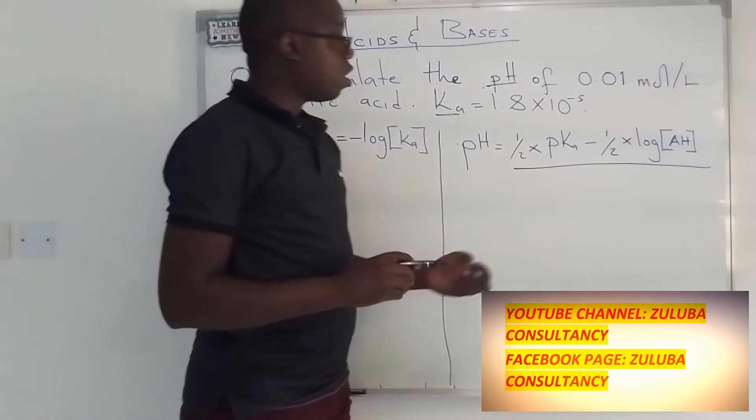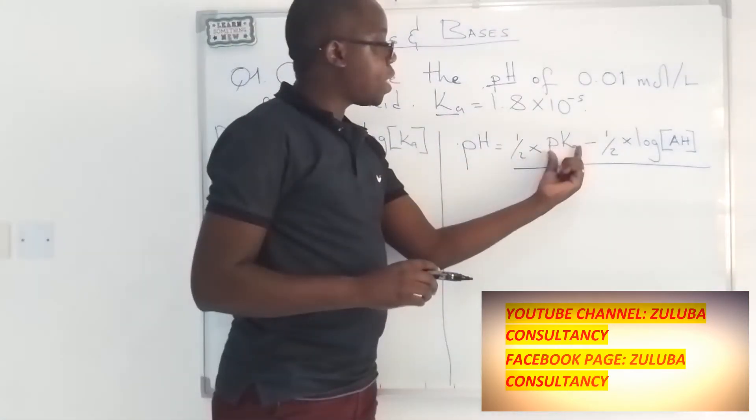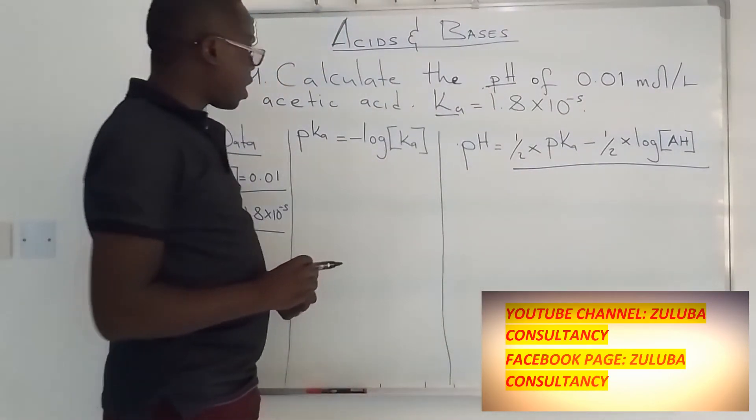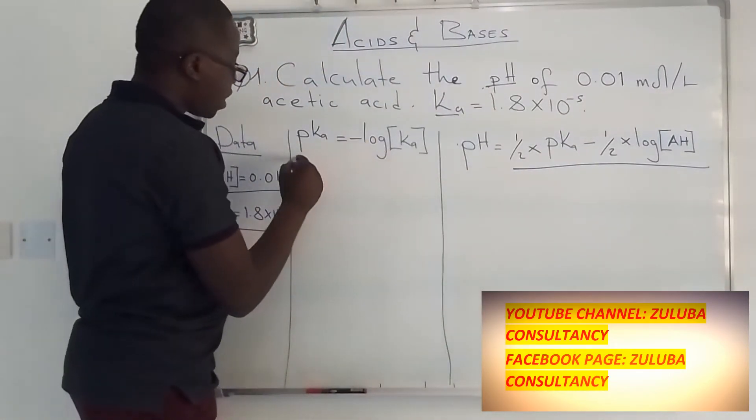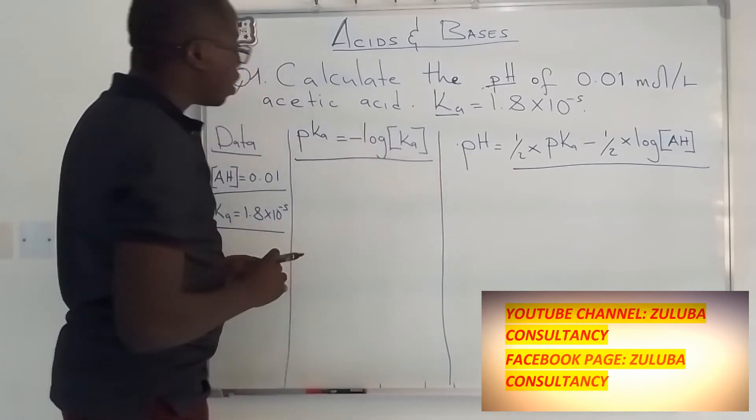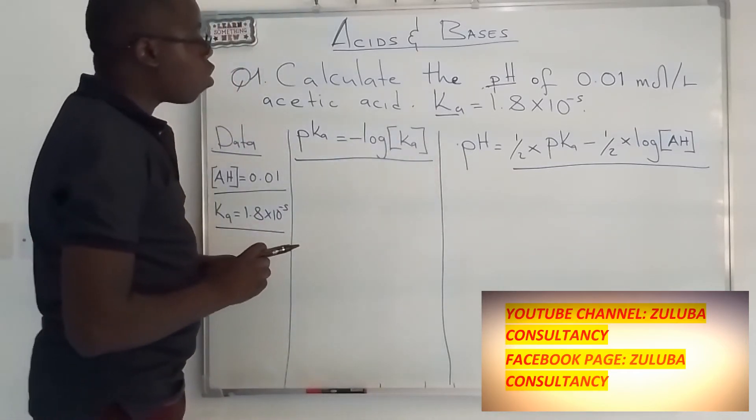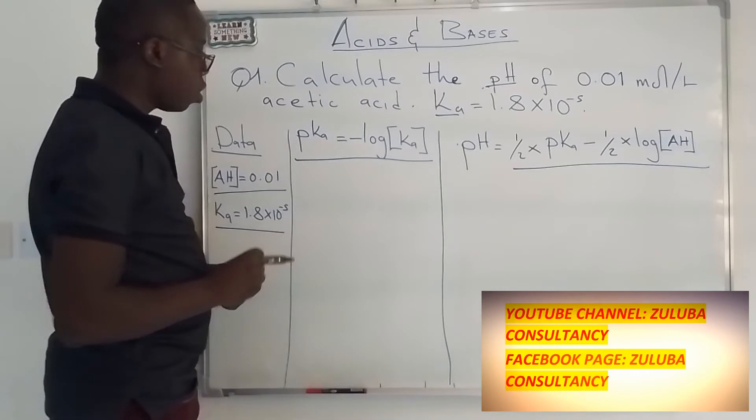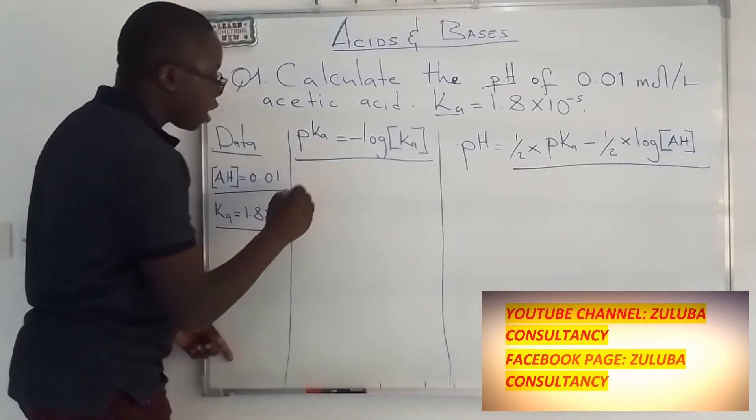So the first thing is we need to find the pKa. How do we get the pKa? We know that pKa is equal to negative log of the Ka value. So let's calculate the pKa first.